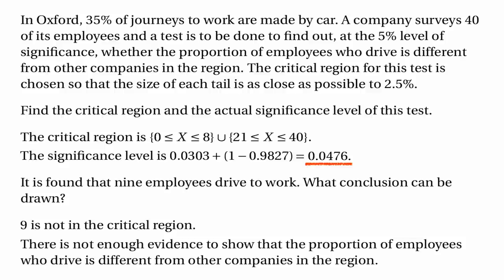Something very important: we're not going to conclude that there is evidence to show that the proportion of employees who drive is the same as Oxford in general — we can't conclude that p is 0.35. That's not how hypothesis tests work. Hypothesis tests always work either by rejecting the null hypothesis or by saying there's not enough evidence to reject the null hypothesis. So we conclude there's not enough evidence to show that the proportion of employees who drive is different from other companies in the region — it may be or may not be, but we don't have enough evidence to make a conclusion.